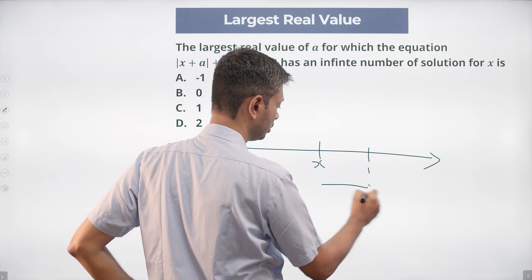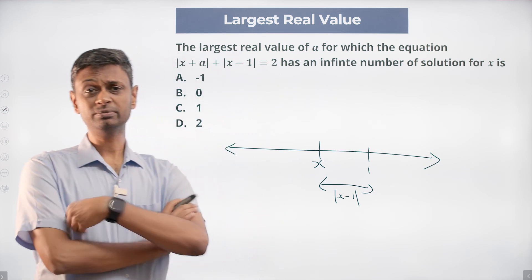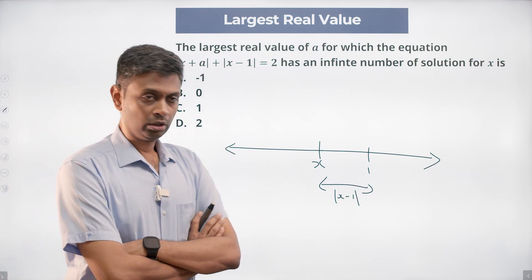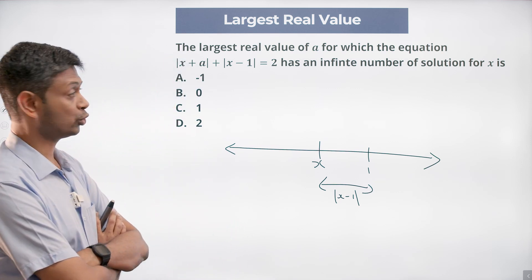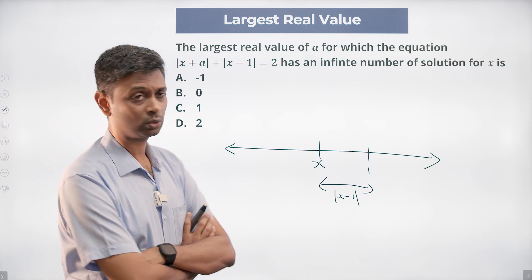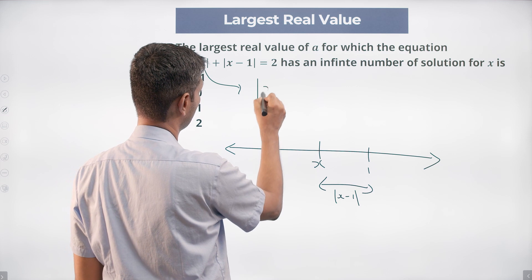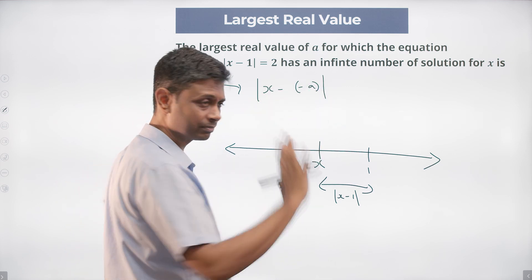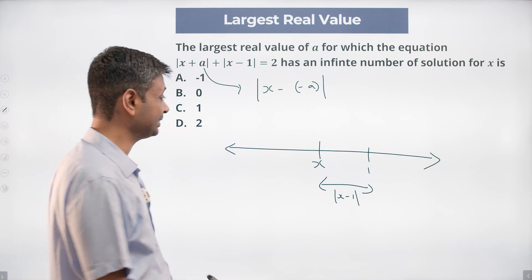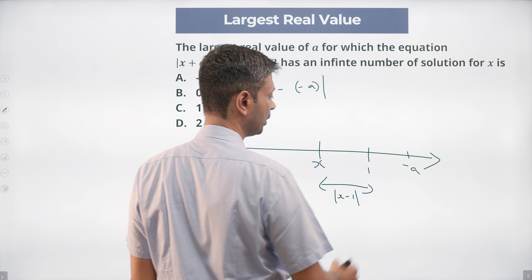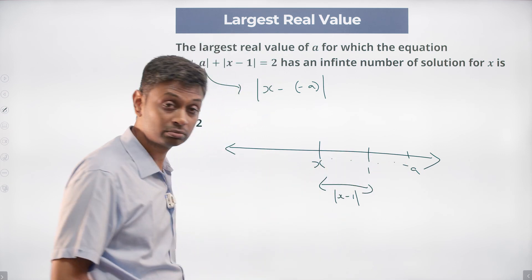We have x here, 1 here. Modulus of x minus 1 is nothing but the distance between x and 1. For infinite number of solutions: |x - 1| + |x - (-a)| = 2. Think about |x + a| as |x - (-a)|. It will have infinite solutions if we place x between the two points.